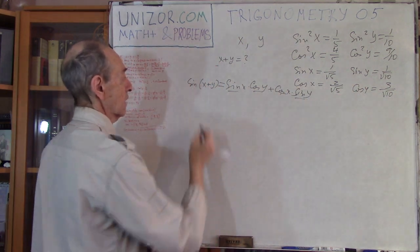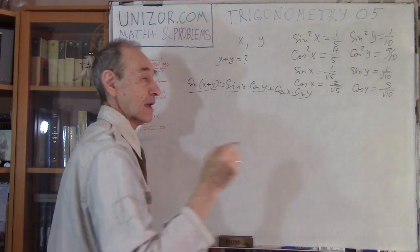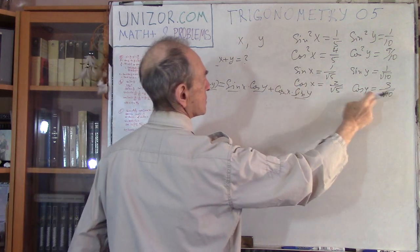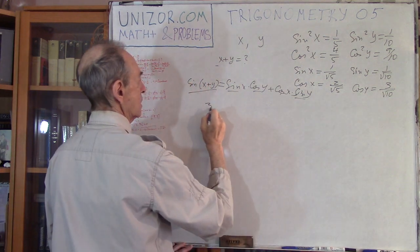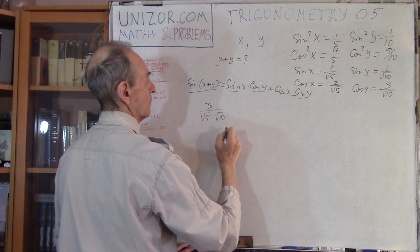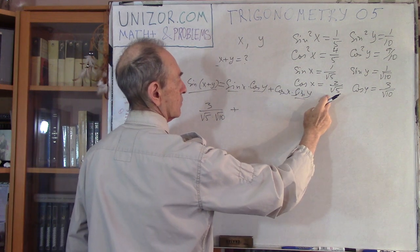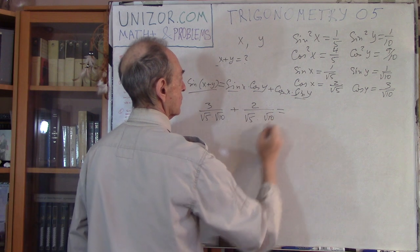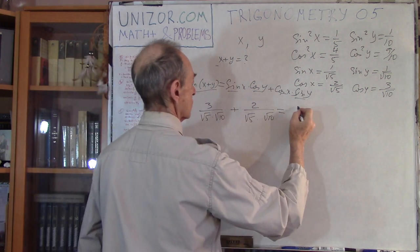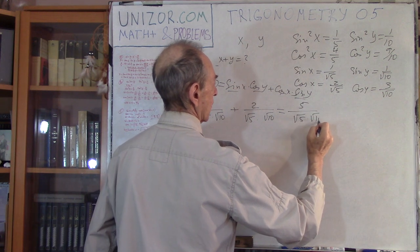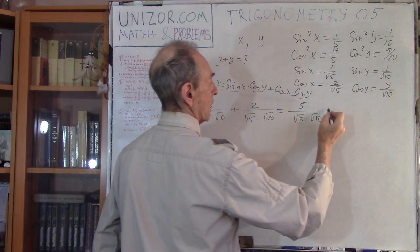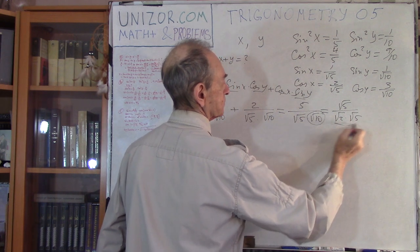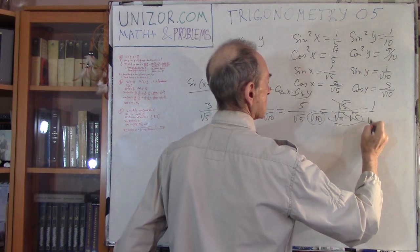Now we can compute sine of (x plus y), which equals sine x times cosine y plus cosine x times sine y. That's one over root five times three over root ten, plus two over root five times one over root ten. Same denominator: three over root fifty plus two over root fifty equals five over root fifty. Five over root five is root five, and root fifty is root two times root five, so this simplifies to one over root two.